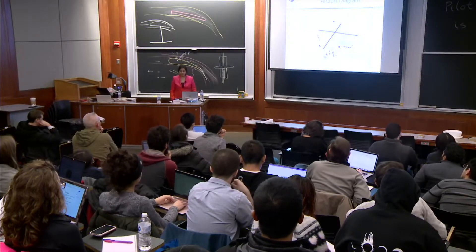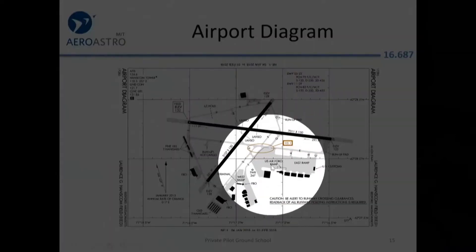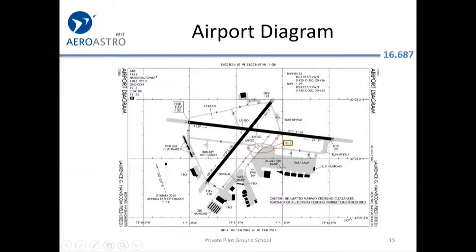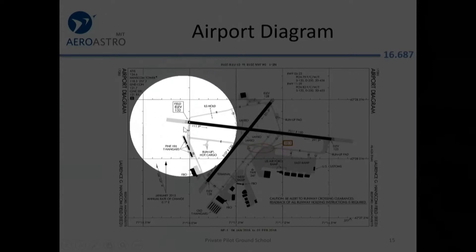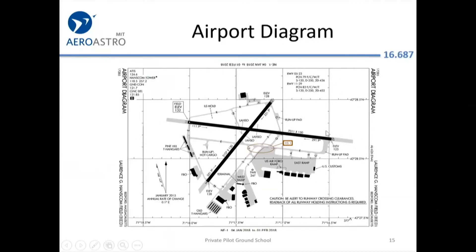Here's an airport diagram — this is actually Bedford. You can see things like the US Air Force ramp. The two intersecting black lines are the main runways, and each runway is bidirectional. One side says 11, the other says 29 — if you land one direction it's one number, the other direction it's another number, corresponding to the heading of that runway. The lighter gray lines are the different taxiways.